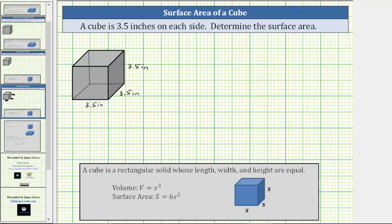Which means the surface area, capital S, is equal to six times the square of little s, which is the square of 3.5 inches.